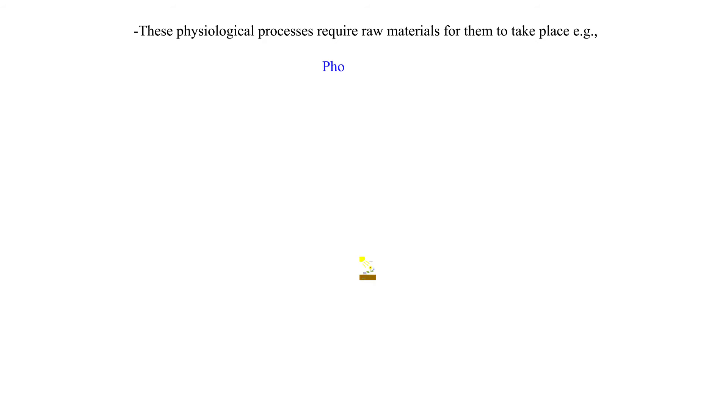These physiological processes require raw materials for them to take place, for example: Photosynthesis. For photosynthesis to take place there must be carbon dioxide, mineral salts, and water which have to be taken to the chloroplast.